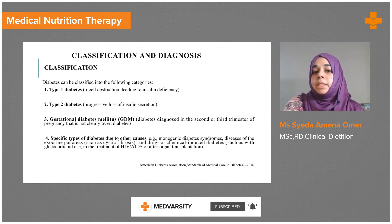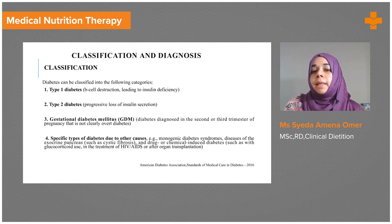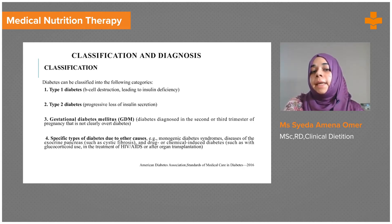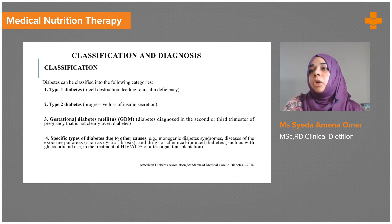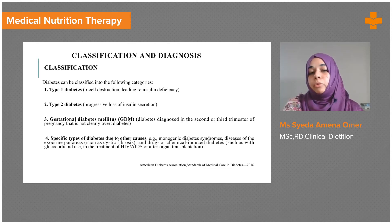Gestational diabetes, as defined by its name, occurs during the second or third trimester of pregnancy. It can develop due to family history, genetic predisposition, as well as diet and lifestyle habits followed before acquiring the pregnancy.